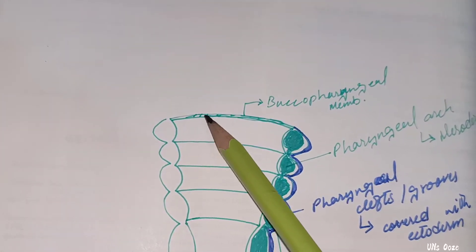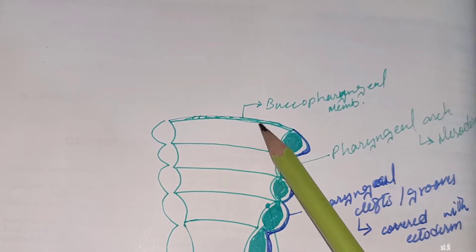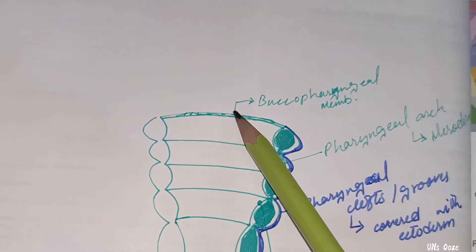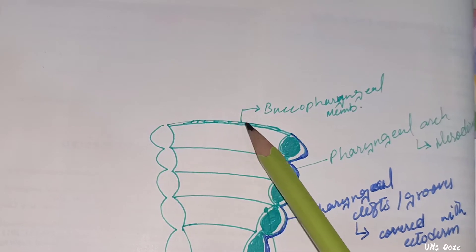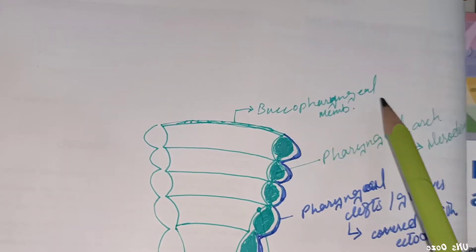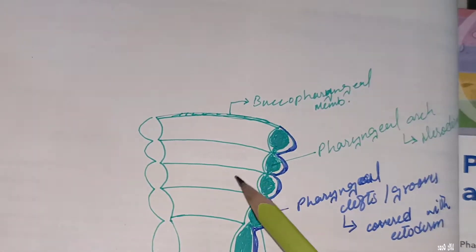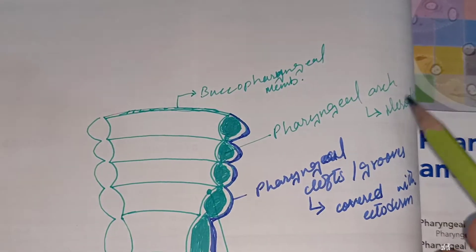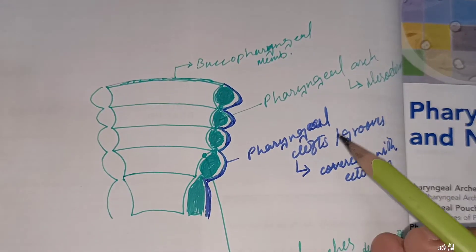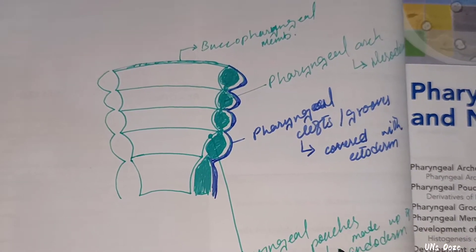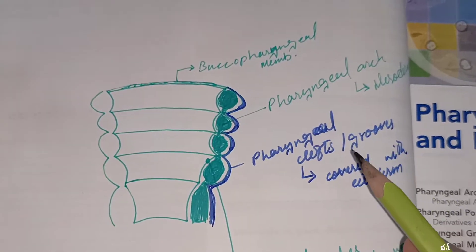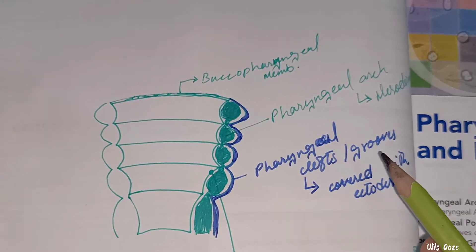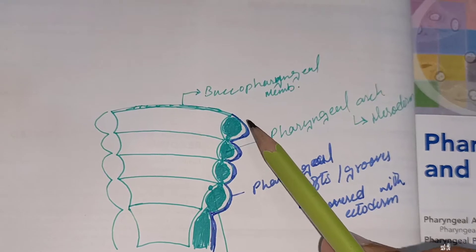First of all, these are the two membranes where the ectoderm and endoderm meet, with loose connective tissue in between — this is called the pharyngeal membrane. Then you have three terms: pharyngeal arch, pharyngeal cleft, and pharyngeal pouches — also called pharyngeal grooves.